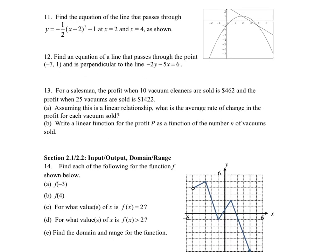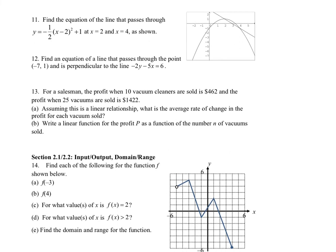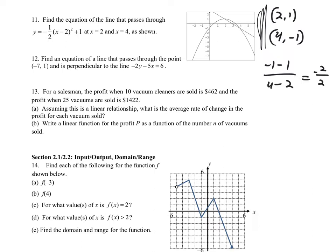For number eleven, we need the equation of a line that passes through a curve at x = 2 and x = 4. Plugging in x = 2 gives the point (2, 1). Plugging in x = 4: four minus two is two, squared gives four, times negative one-half is negative two, plus one gives negative one, so the point is (4, negative 1). The slope is (negative 1 minus 1) over (4 minus 2) = negative 2 over 2 = negative 1.